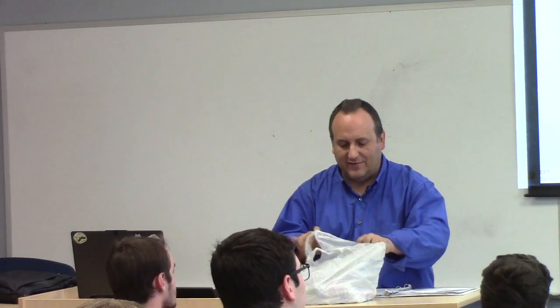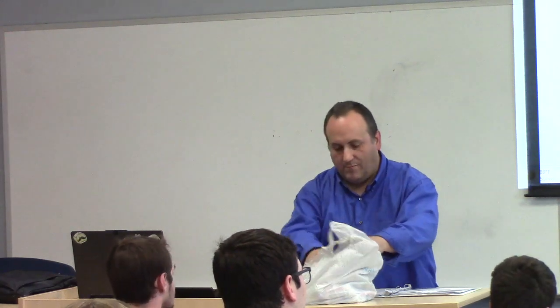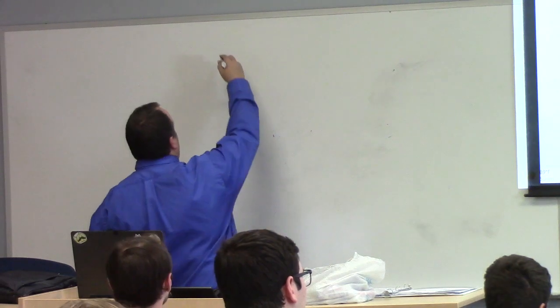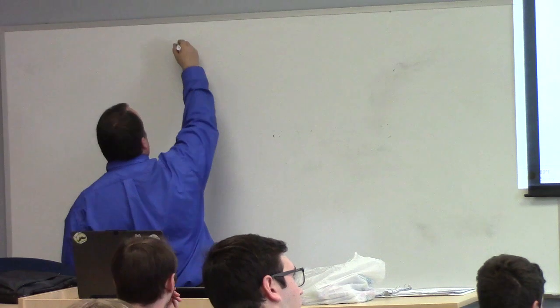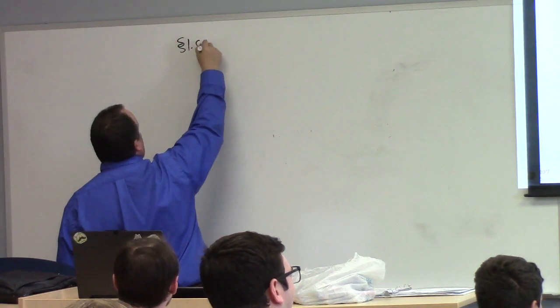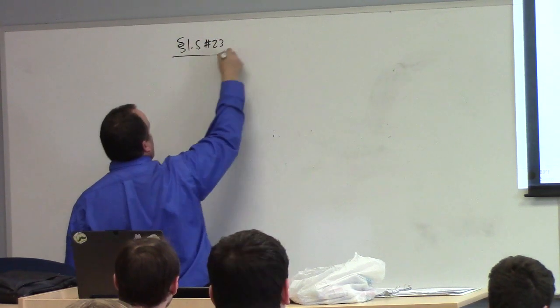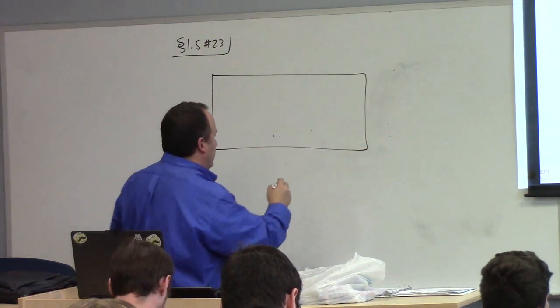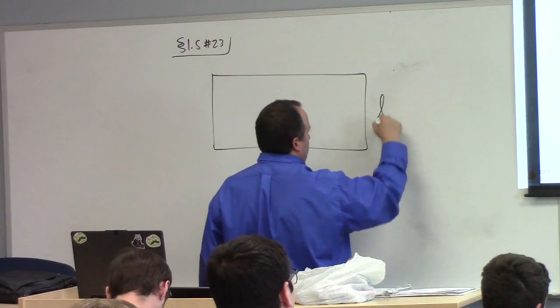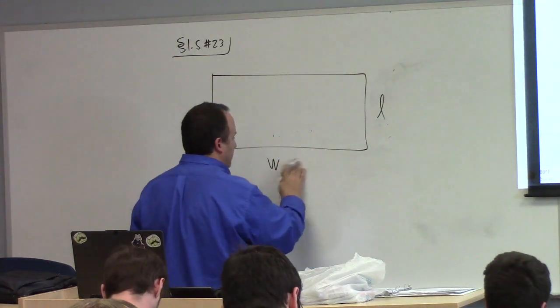So you look at this problem and you say, what on earth does this have to do with quadratic equations, right? But it's got everything to do with it. Let's draw a picture. So we've got this picture. Let's say this is the length, this is the width. How are these related? What are dimensions of a parking lot, by the way?